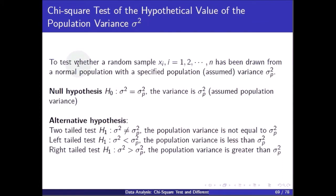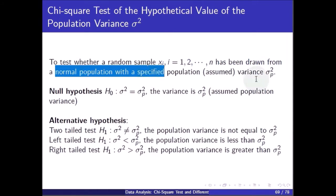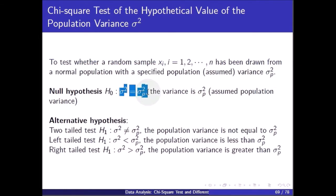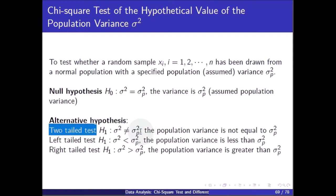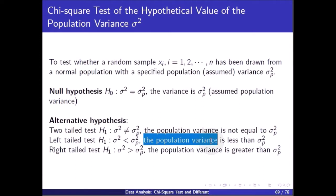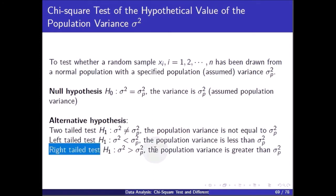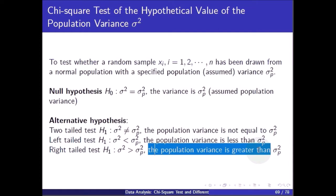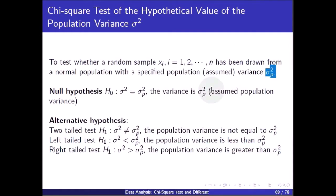To test whether a random sample Xi has been drawn from the normal population with specified population variance sigma p square, the null hypothesis H0 is that the variance equals sigma p square. For the two-tail test, the alternative hypothesis is that sigma square is not equal to sigma p square. In the left-tail test, the population variance is less than sigma p square. And in the right-tail test, the population variance is greater than sigma p square. Here, sigma p square is the assumed population variance.